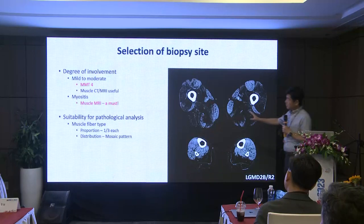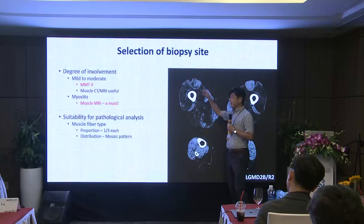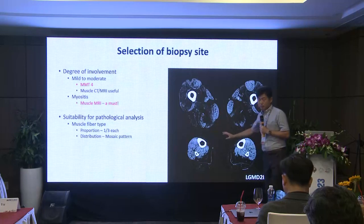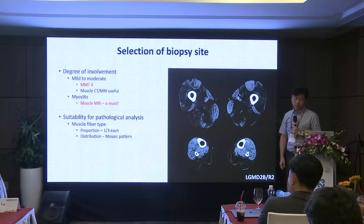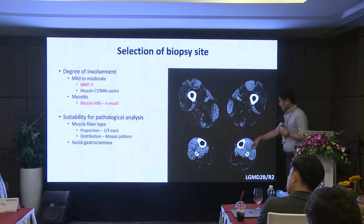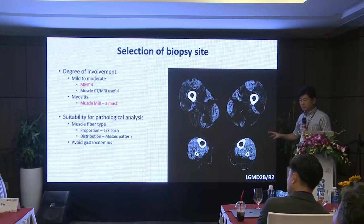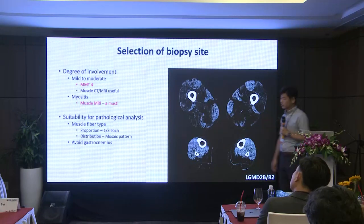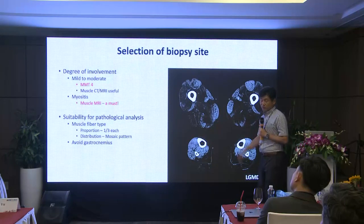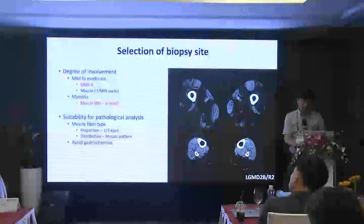You must be careful because if the muscle is not appropriately involved, you should avoid it. But if one particular muscle is the only one affected, of course you have to biopsy from that site. Also, gastrocnemius should generally be avoided because it is very difficult to differentiate chronic myopathic and chronic neurogenic conditions from that muscle.